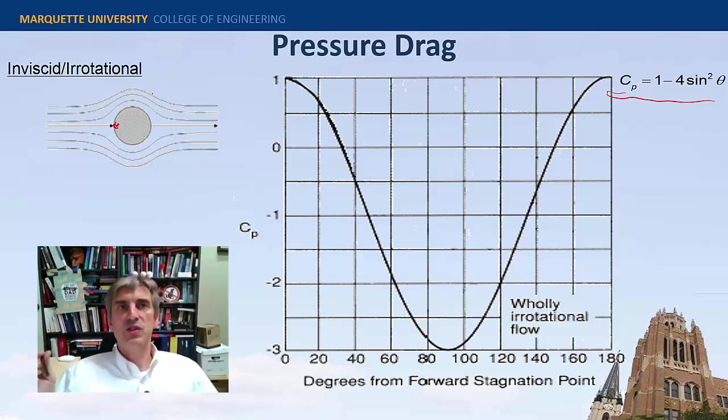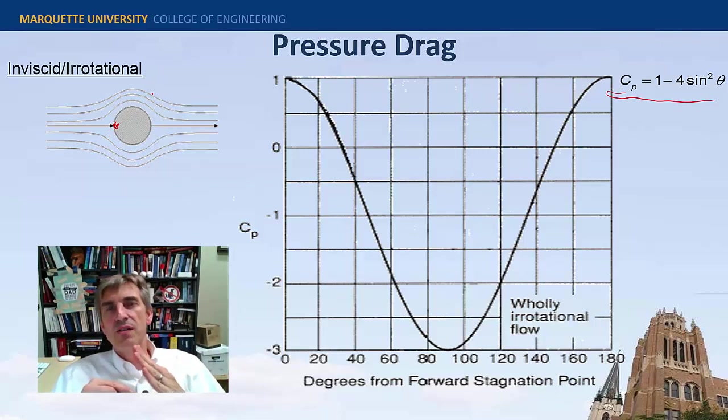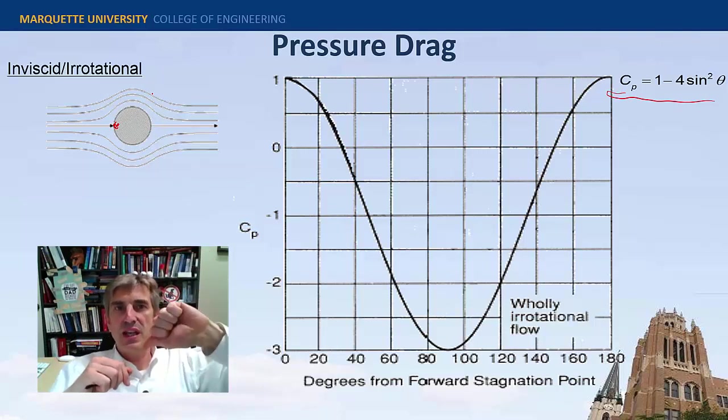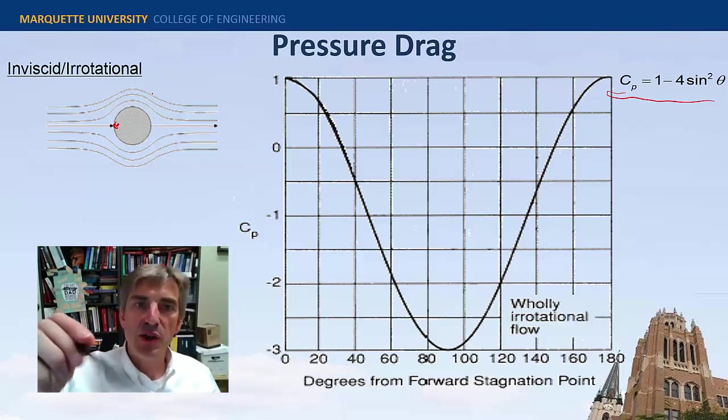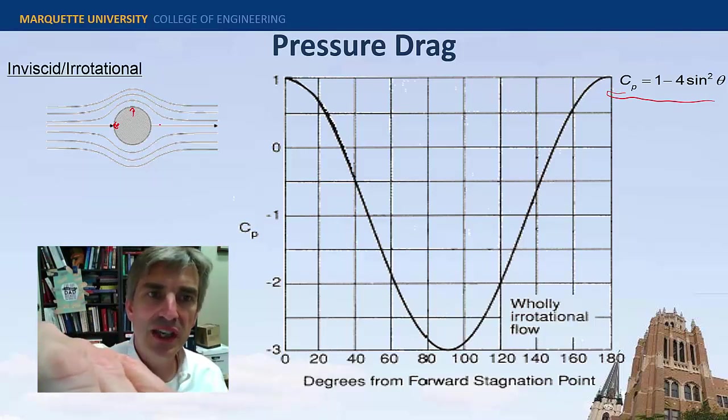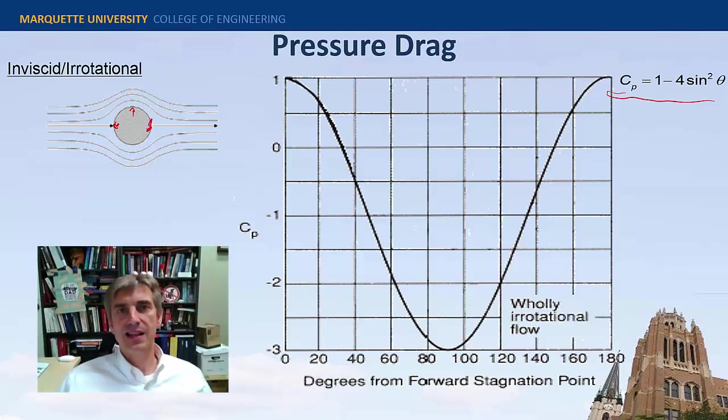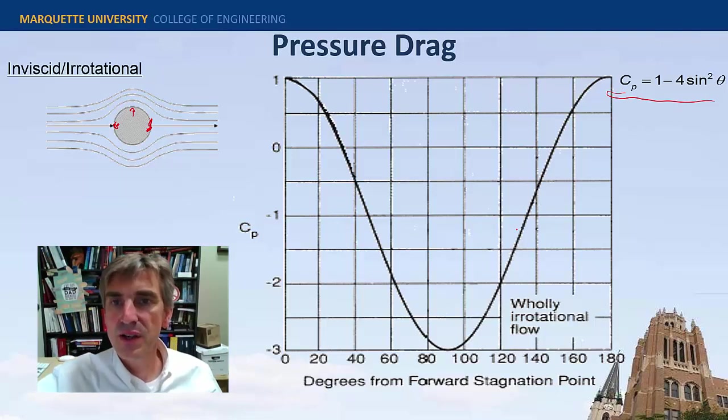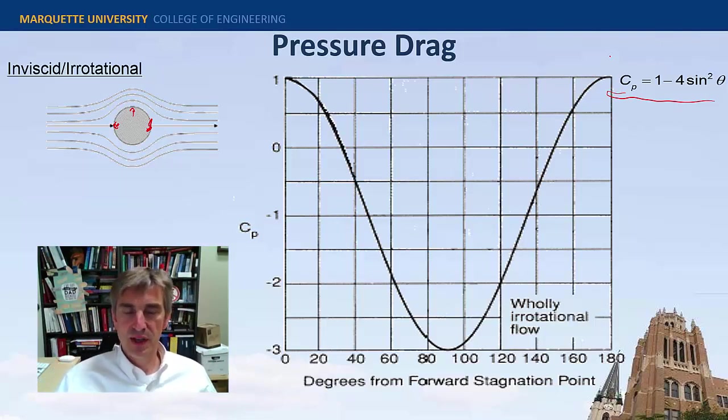And then as the velocity increases, as the velocity goes up from zero, Bernoulli equation says the pressure's got to go down. And so the pressure drops, drops, drops, drops, drops. And so the maximum velocity is here at the top where you get the minimum pressure. And then the velocity slows again as you come towards the second stagnation point in the back. So this is where it slows, and here's the second stagnation.